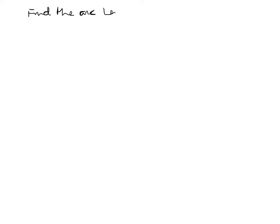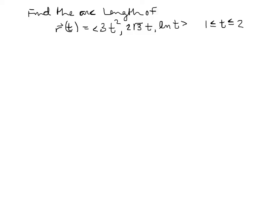Let's find the arc length of r(t) = (3t², 2√3·t, ln t) from t = 1 to t = 2. We need to find the derivative — the tangent vector. The derivative of 3t² is 6t.